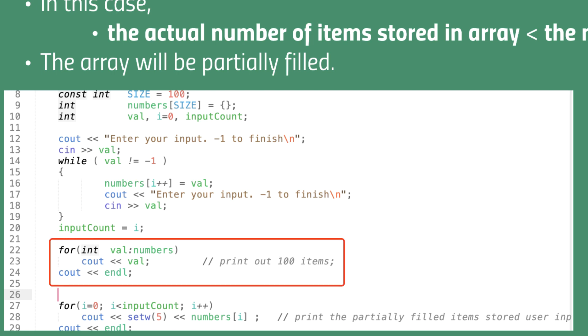If we use the range-based for loop to print out the array, the 100 elements will be displayed, even though we use just part of array.